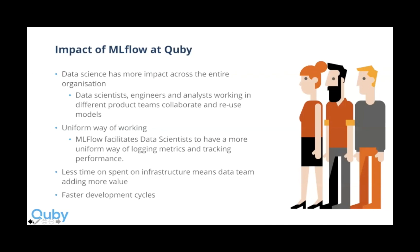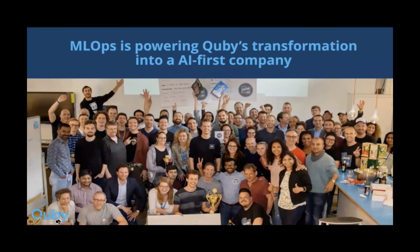We also see that development cycles are quicker. Previously, work done in the past on ML model development was largely hidden. Now it's a lot quicker to pick up proof of concepts developed months ago and rapidly bring them up to speed to increase the development cycle. Overall, MLflow plus the whole MLOps way of working is helping to power Quby's transformation into an AI-first company.